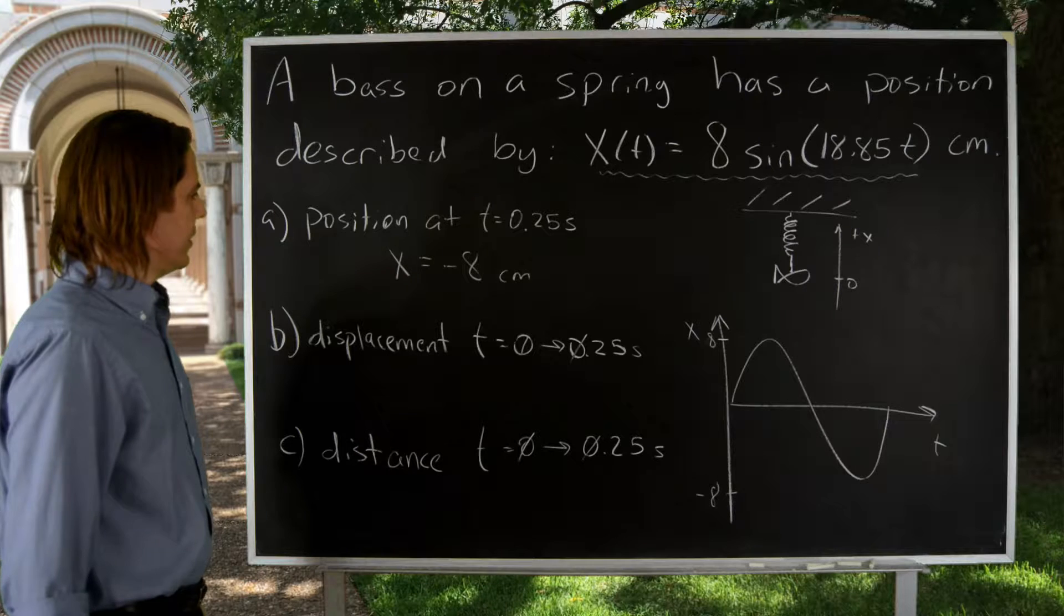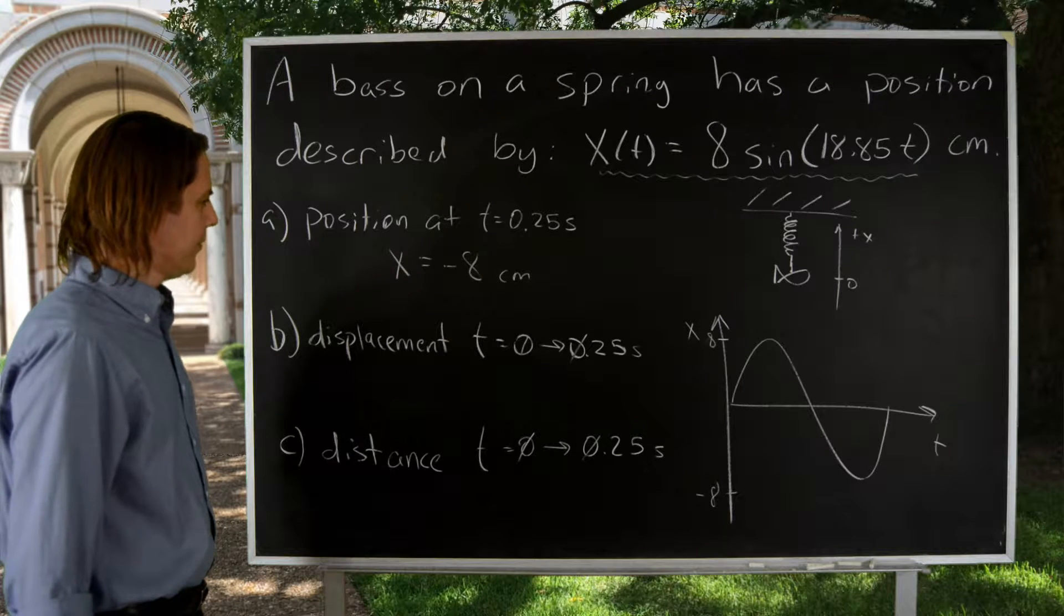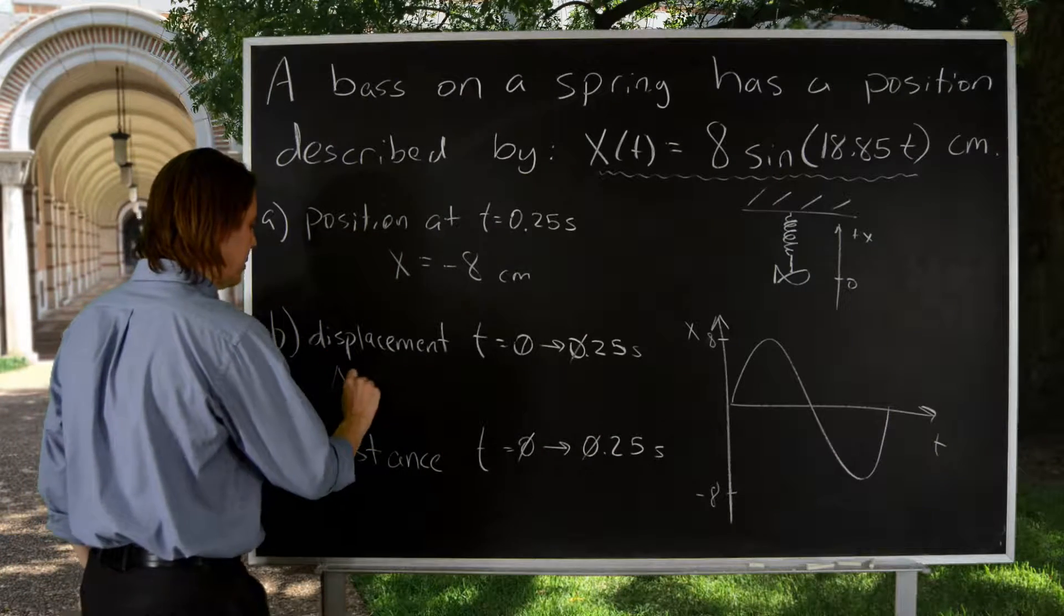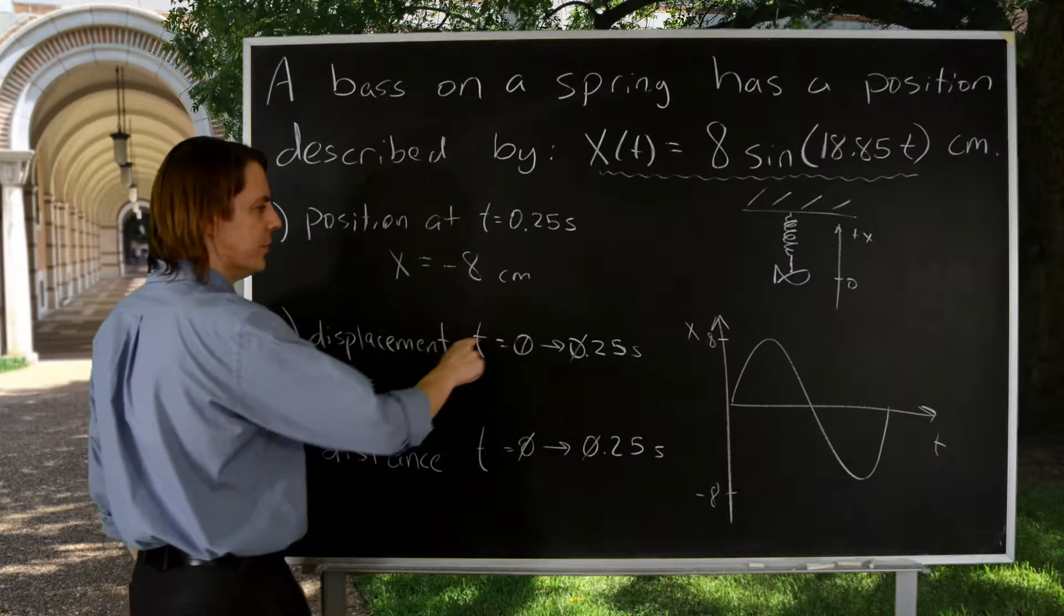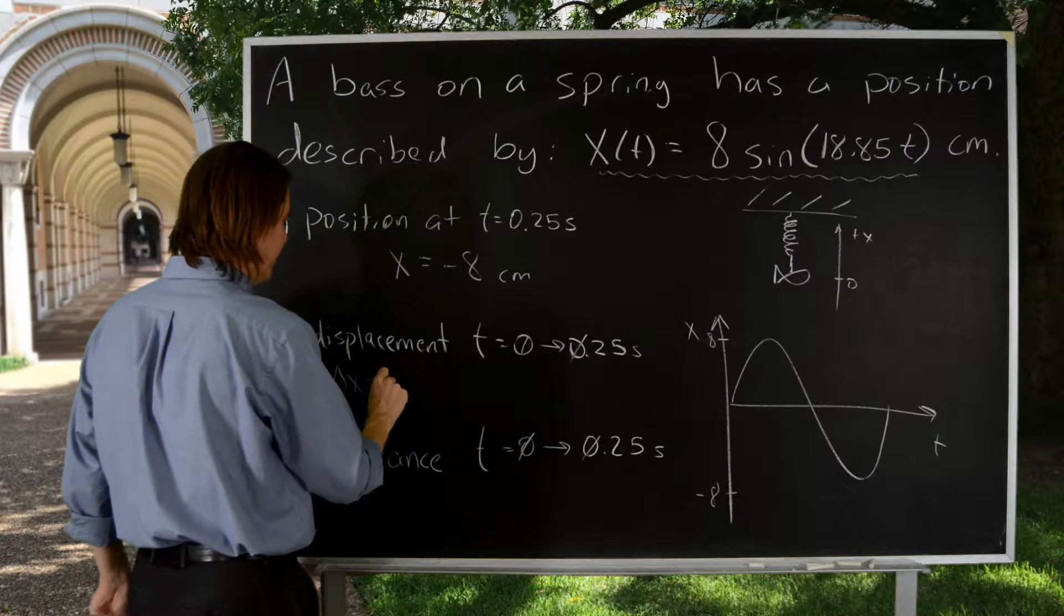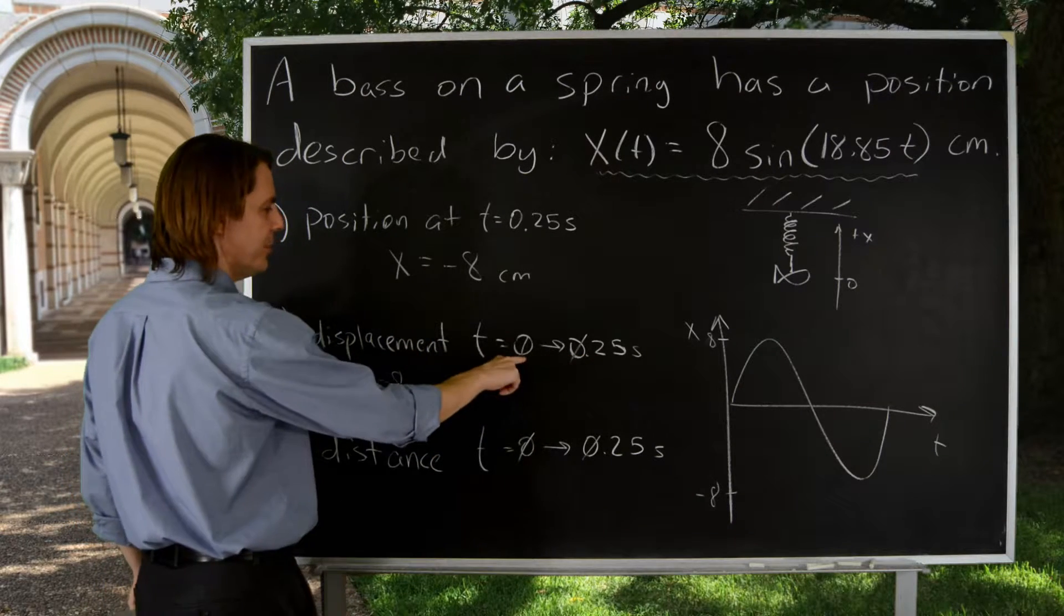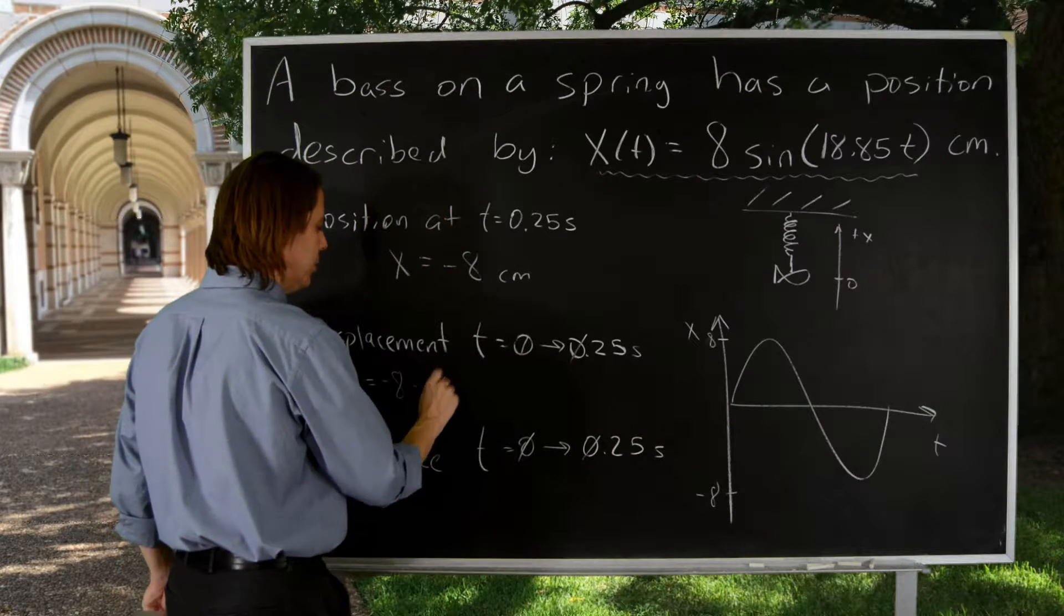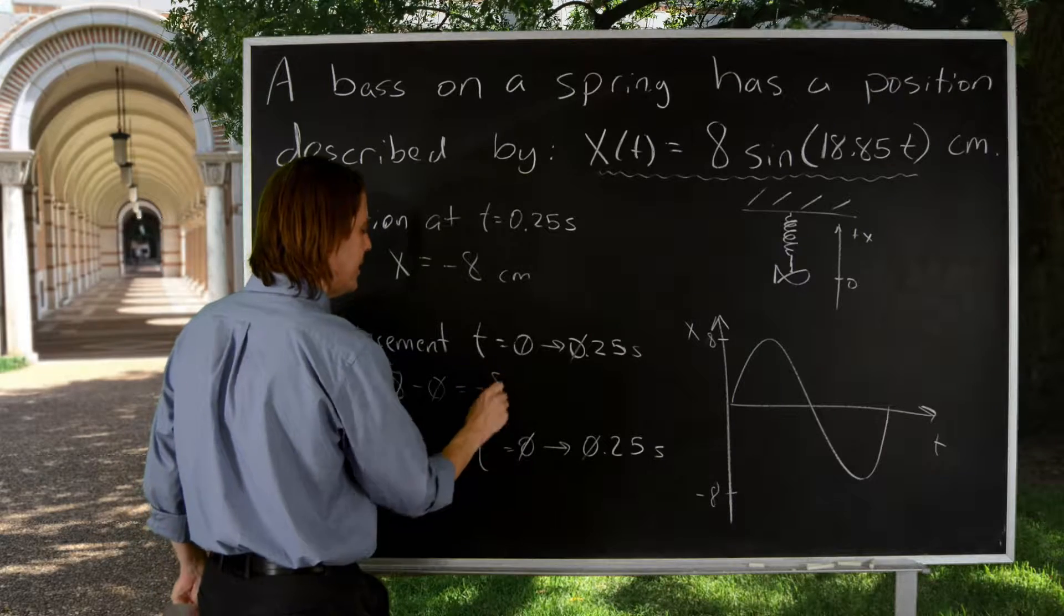Let's see. The displacement from 0 to 0.25 seconds. All right, so we know displacement delta x is final minus initial. So the position at 0.25, we just solved it. It was minus eight minus the position at 0. For a sine, we know the position at 0 is 0. So the answer then would be minus eight.